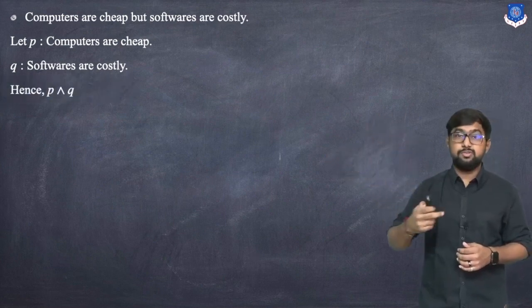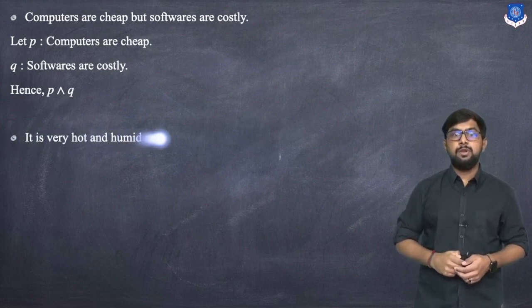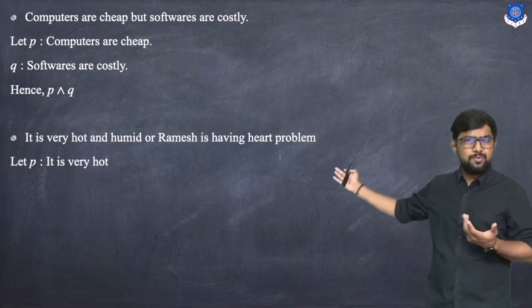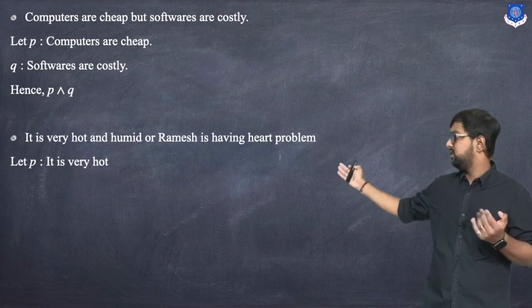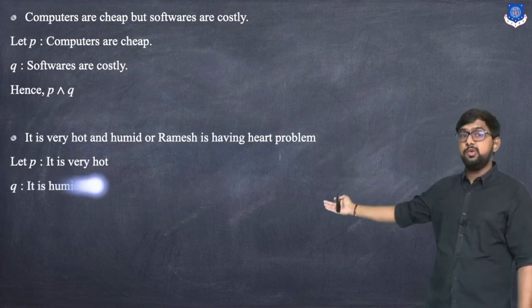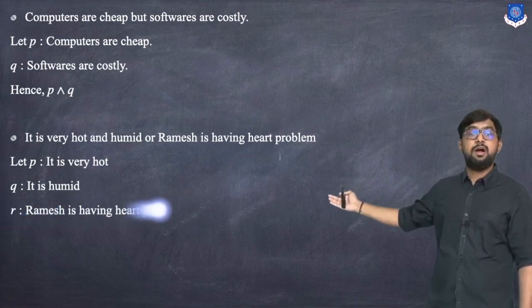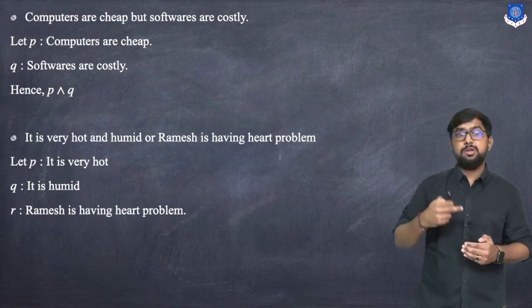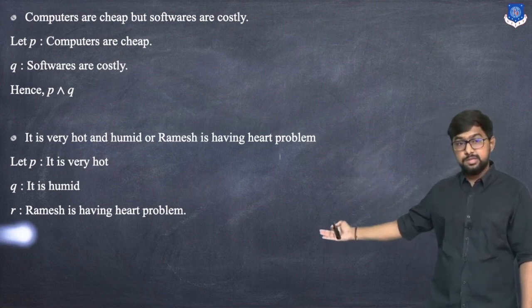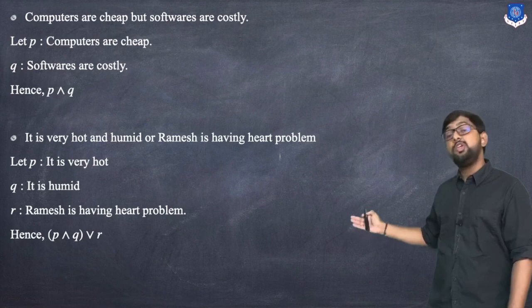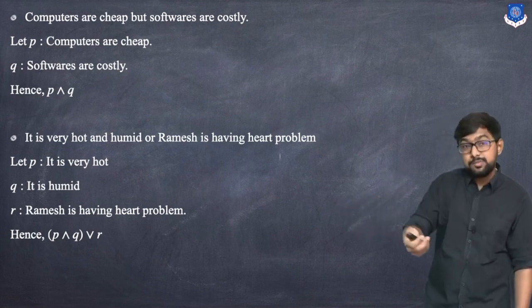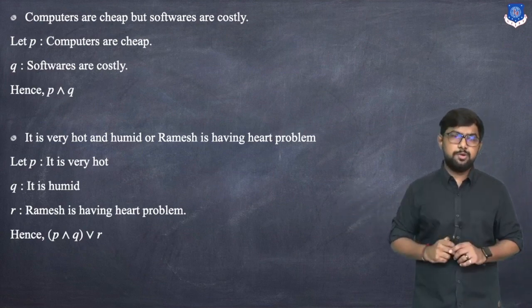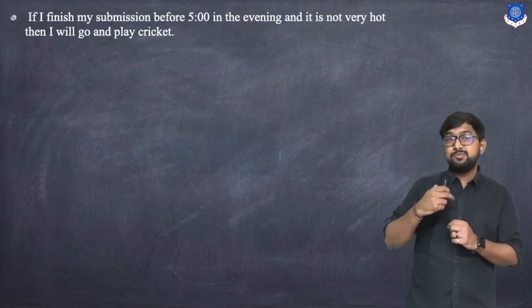Next: 'It is very hot and humid or Ramesh is having a heart problem.' There are three parts: P = 'it is very hot,' Q = 'it is humid,' R = 'Ramesh is having a heart problem.' The propositional form is (P ∧ Q) ∨ R.